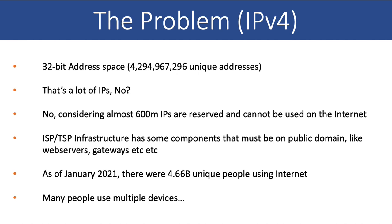And consider this: in January 2021, there were 4.66 billion unique people using the internet, and not all of them have just one device. They have their laptops, their phones, their iPads. So there are multiple devices and each device needs to have a unique address to interact with the internet.